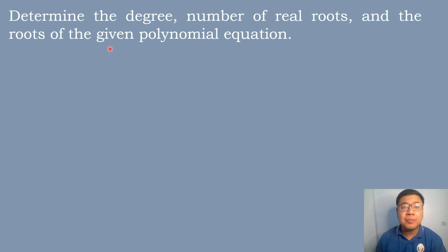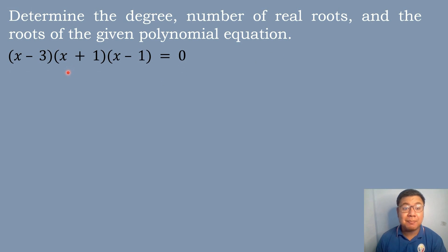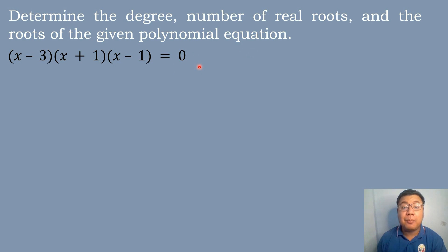Let's have our first example. Determine the degree of polynomial, number of real roots, and the roots of the given polynomial equation: (x − 3)(x + 1)(x − 1) = 0. The polynomial equation is expressed as a product of linear factors.